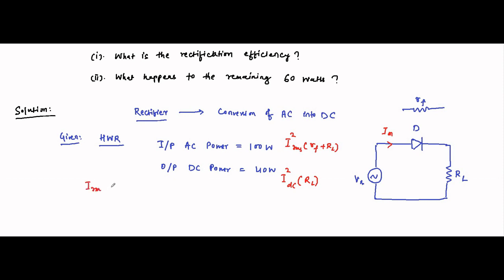For a half wave rectifier, I_rms is equal to I_m divided by 2, and I_dc is given by I_m divided by π, where I_m is the maximum value of current flowing through the half wave rectifier circuit.